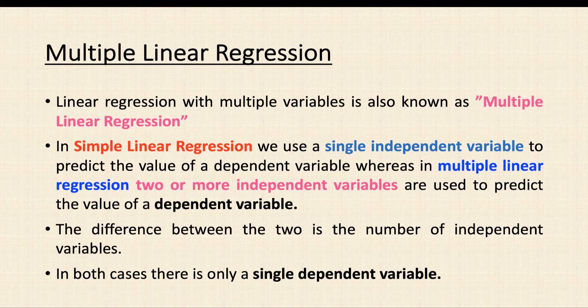Linear regression with multiple variables is also known as multiple, multivariate, or multi-variable linear regression. In simple linear regression we used only one single independent variable to predict the value of the dependent variable, whereas in multiple linear regression two or more independent variables are used to predict the dependent variable. The main difference is the number of independent variables, but in both cases there is only one single dependent variable — one single output.